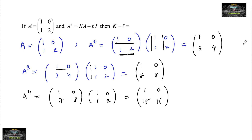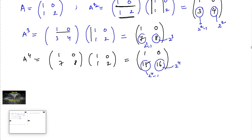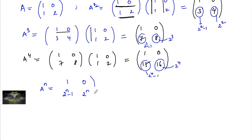Looking at the bottom-right entries: for A², we get 4 = 2², and the bottom-left is 3 = 2²−1. For A³, bottom-right is 8 = 2³ and bottom-left is 7 = 2³−1. For A⁴, bottom-right is 16 = 2⁴ and bottom-left is 15 = 2⁴−1. The top row [1, 0] stays the same in every matrix. So we can write the general formula: A to the power n equals [[1, 0],[2ⁿ−1, 2ⁿ]].